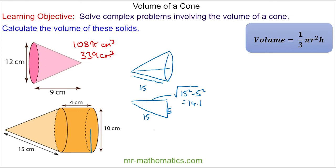We can now work out the volume of the cone as πr² × h divided by 3: π × 5² × 14.1 divided by 3. Putting this into a calculator, we get approximately 370 cm³.